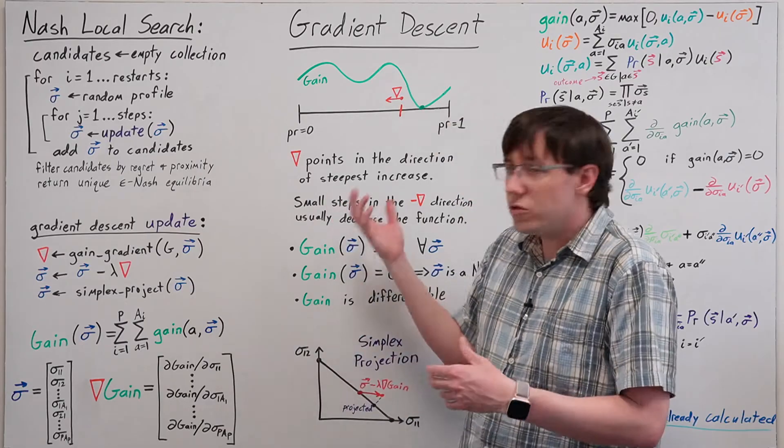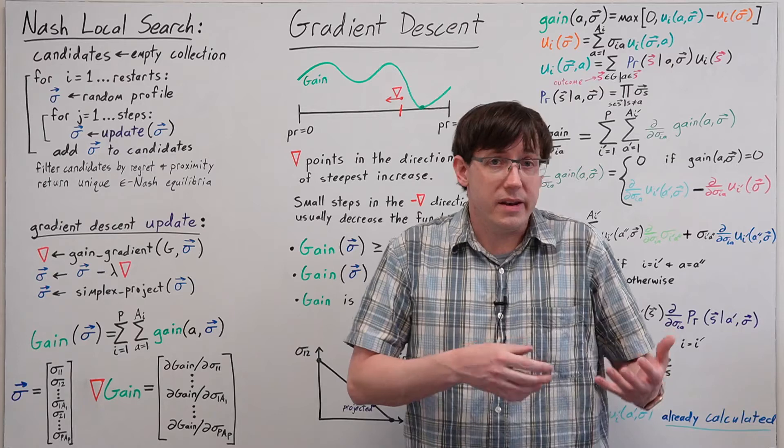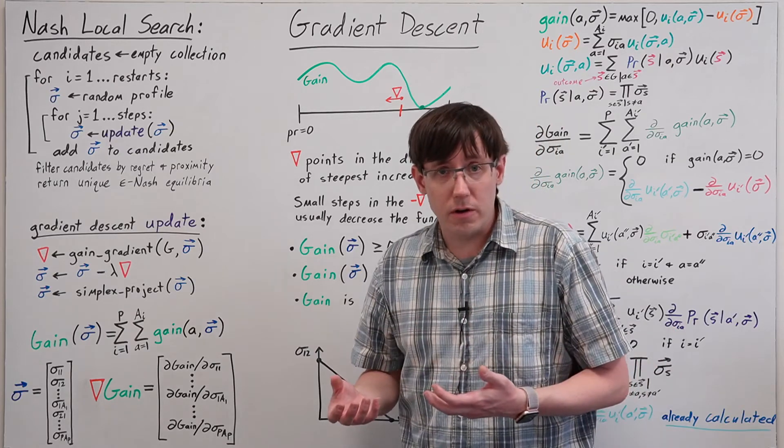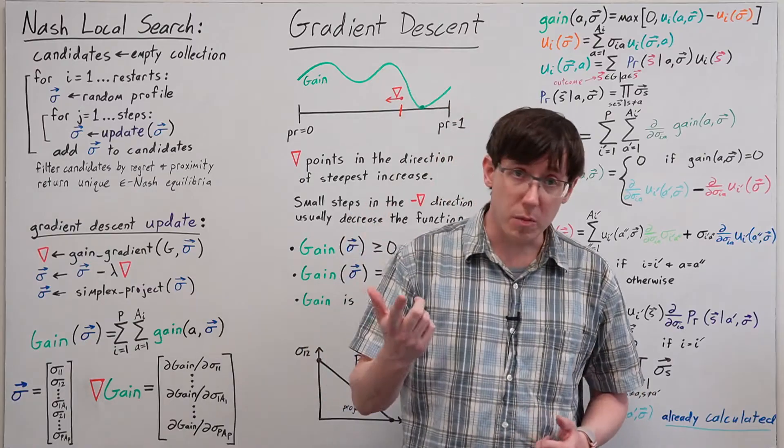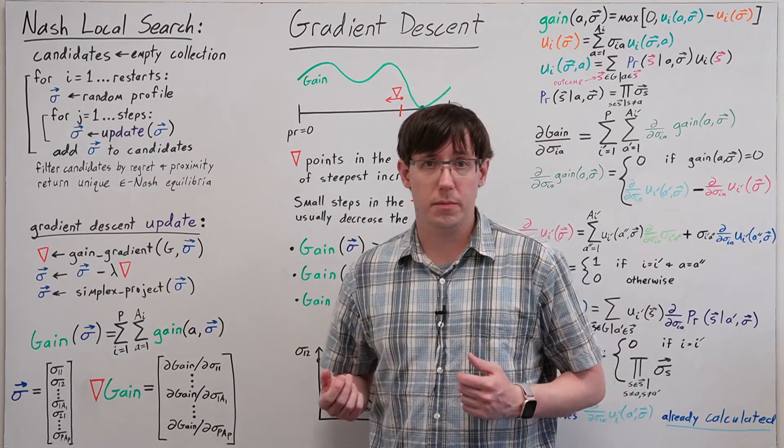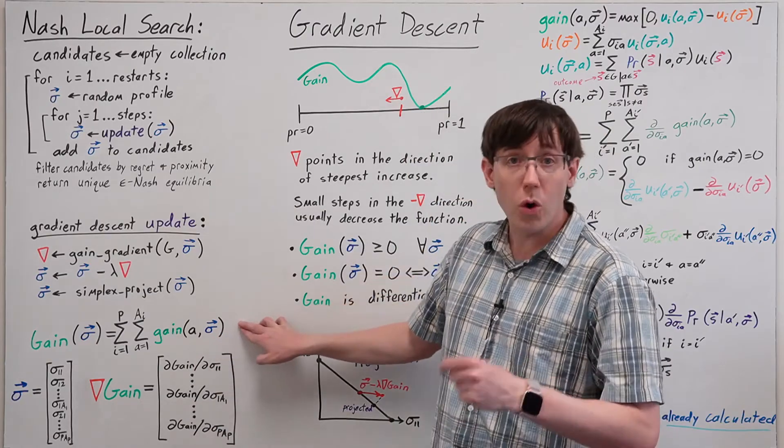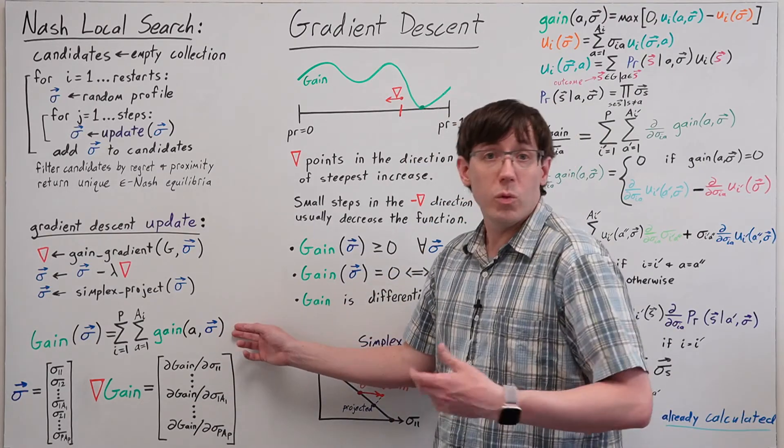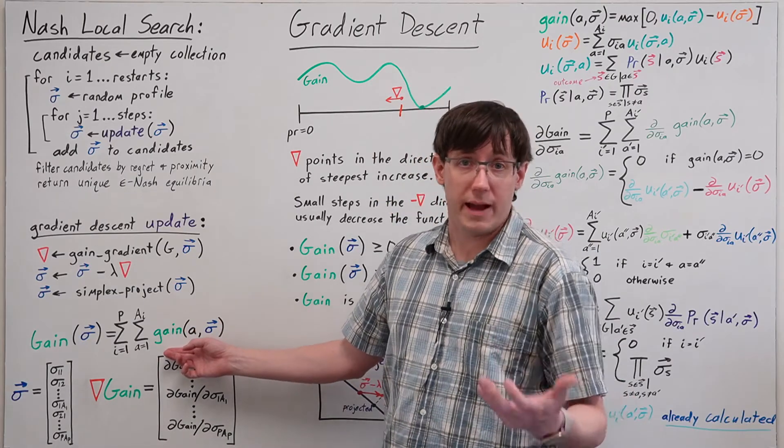If we want to use gradient descent to calculate Nash equilibria, we need to identify some function that we can differentiate and whose minima correspond to Nash equilibria. The clear choice for our purposes is the total gain function, which we define as a sum of all of the individual action gains.